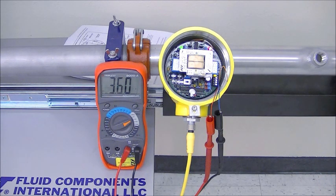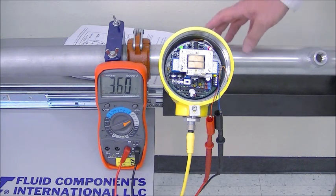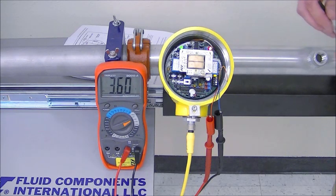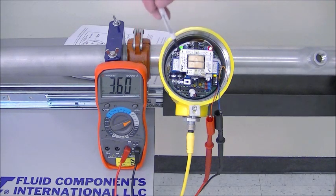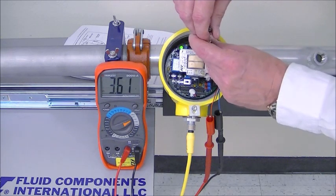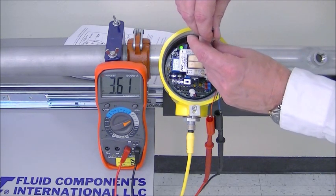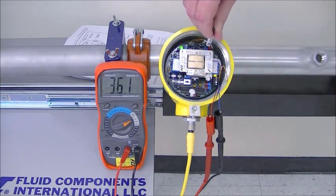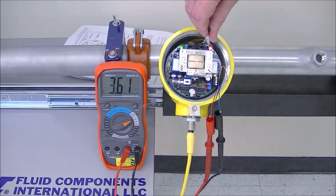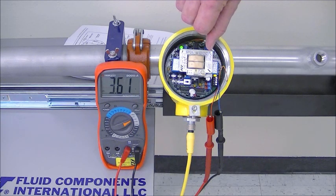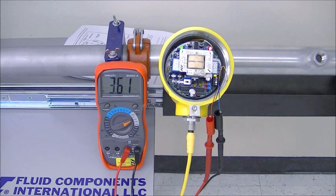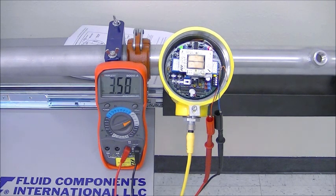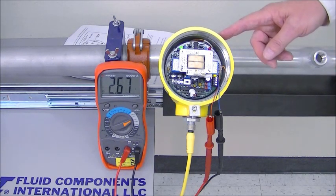However, if you want to optimize a set point, for example, going from no flow to flow, what you do is you install the switch in a pipe that has no flow. And you leave the switch in a run mode and you simply turn the set pot for relay number one, in this case, until the relay just comes on and then you turn it an extra half turn. Now, if we turn the flow on, see how quickly it goes off? You get a very fast alarm.